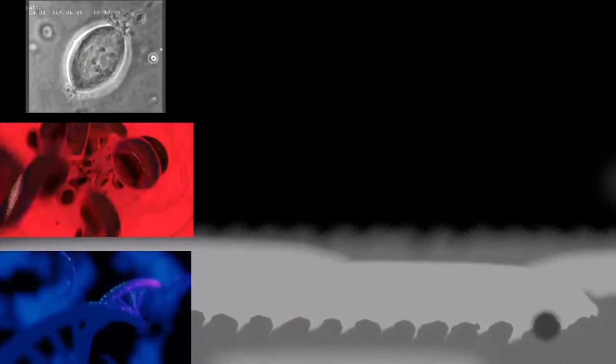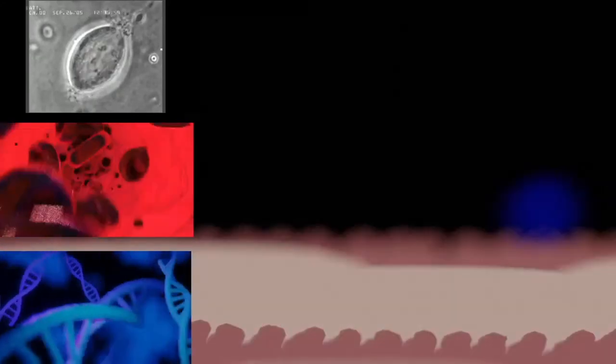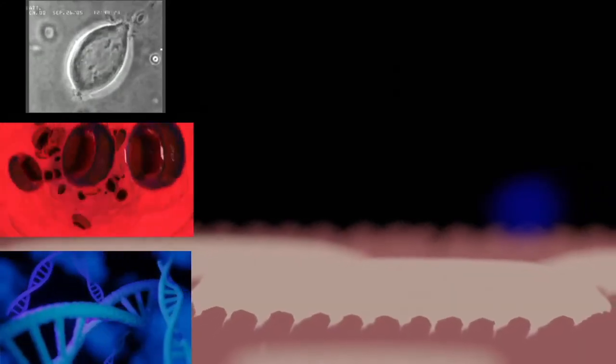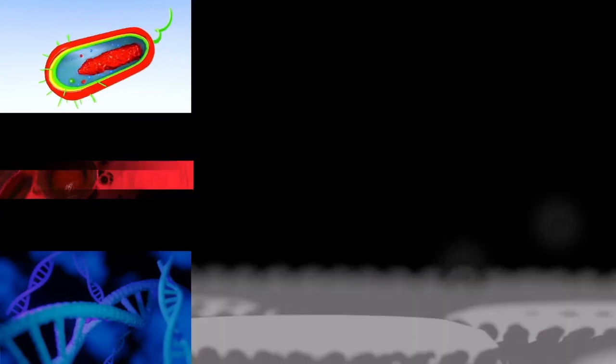In 1977, Woese and George Fox introduced a third form of life, which they called the Archaebacteria. In 1990, Woese, Otto Kandler, and Mark L. Wheelis renamed this the Archaea. In 1979, G.W. Gould and G.J. Dring suggested that the eukaryotic cell's nucleus came from the ability of gram-positive bacteria to form endospores.